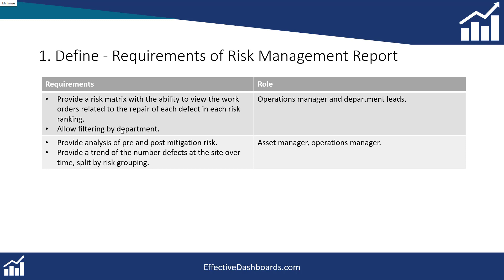The next screen will look at pre and post mitigation risk analysis — the risk as it was reported versus the risk as it stands once mitigation is in place. Finally, we'll provide a trend of the number of defects over time. So in total we'll have four main screens: an overall risk status screen, a drill-down screen showing the list of work orders, a screen showing pre and post risk analysis, and a screen showing a trend over time.